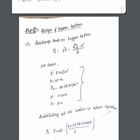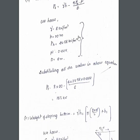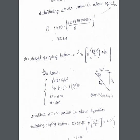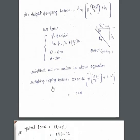Step 5: design of hopper bottom. Find the surcharge load using the formula: gamma × h − (4 × ph × mu_dash / d), where gamma = 8 kN/m³, h = 20 m, mu = 0.444, and d = 6 m. Find the weight of the sloping bottom using Pythagoras theorem to determine hs — the slant height of the hopper. Use (D + d) / 2 + hs, where D is silo diameter and d is hopper opening diameter.